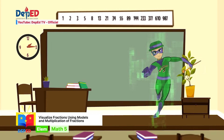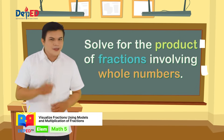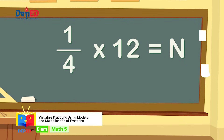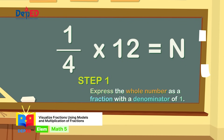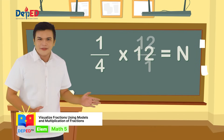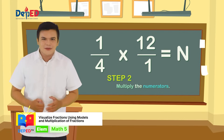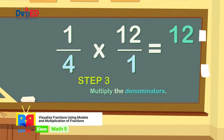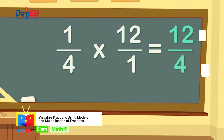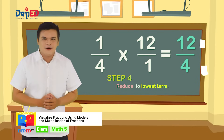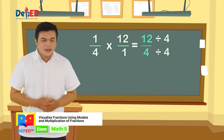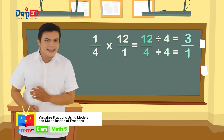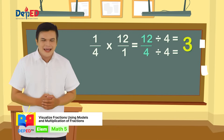Now let's solve for the product of fractions involving whole numbers. Example: one-fourth times 12 equals n. Step one: express the whole number as a fraction with denominator one — now we have one-fourth times twelve over one. Step two: multiply the numerators — one times twelve equals twelve. Step three: multiply the denominators — four times one equals four. Our answer is twelve over four. Step four: reduce to lowest term — the GCF of 12 and 4 is 4. Twelve divided by four equals three, four divided by four equals one. Our final answer is three over one, or 3.